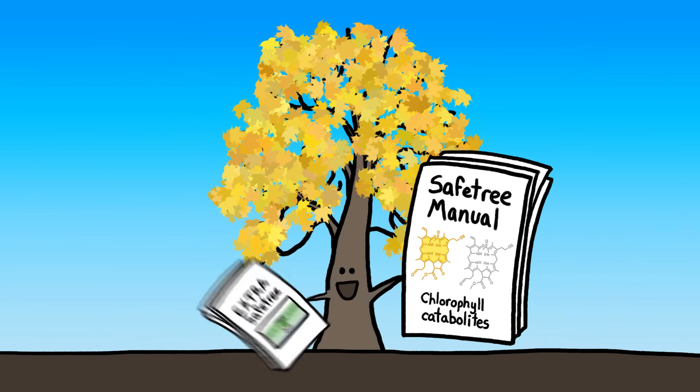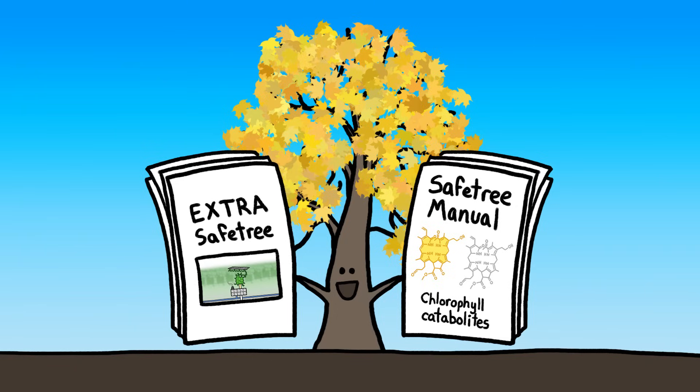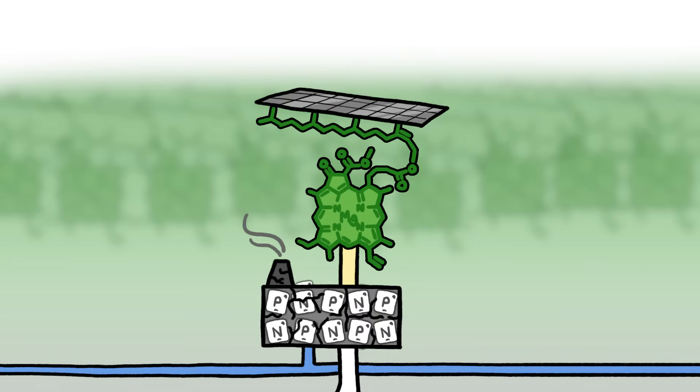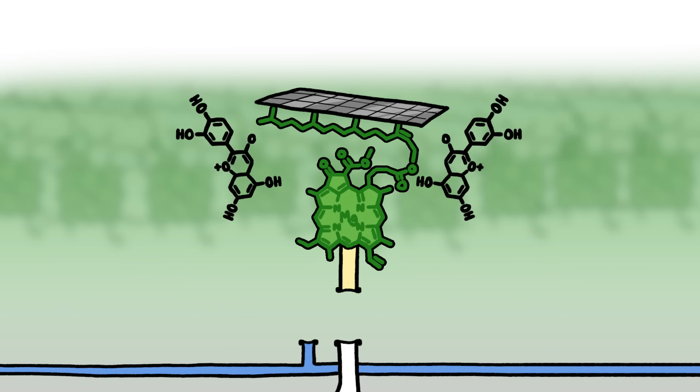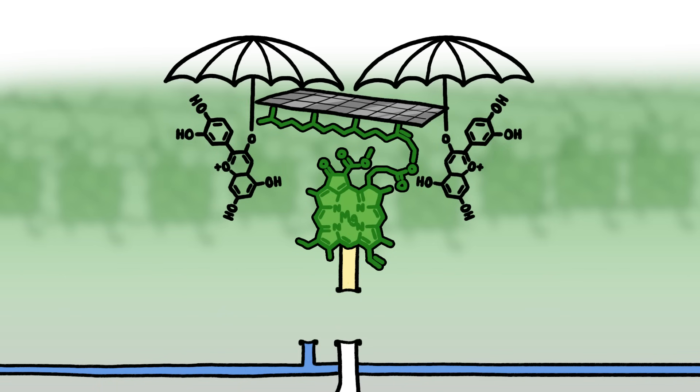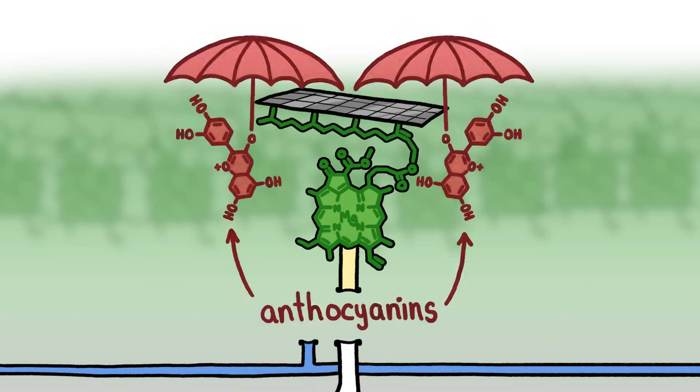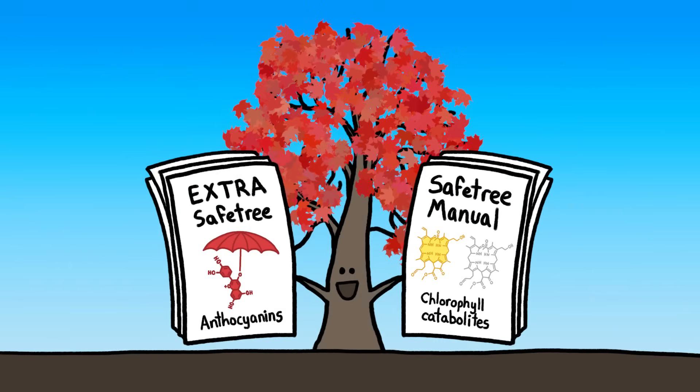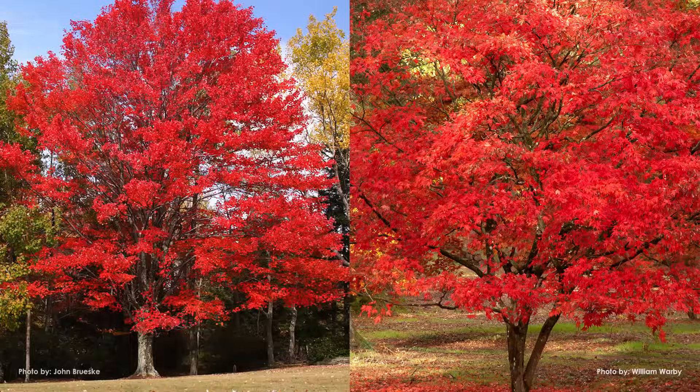Some trees take an extra autumnal precaution against chlorophyll-induced destruction. As the leaf dismantling starts, they build new special pigments to shade chlorophyll from sunlight until it can be broken down. These new pigments tend to be red or purple in color, so trees that use them have red leaves in the fall, sometimes insanely bright red.